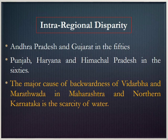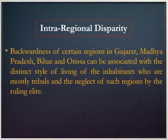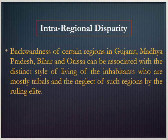In each state, specific reasons exist for the backwardness of regions. For example, the major cause of backwardness of Vidarbha and Marathwada in Maharashtra and northern Karnataka is the scarcity of water. The backwardness of certain regions in Gujarat, Madhya Pradesh, Bihar, and Orissa can be associated with the distinct style of living of the inhabitants, who are mostly tribals, and the neglect of such regions by the ruling elite.